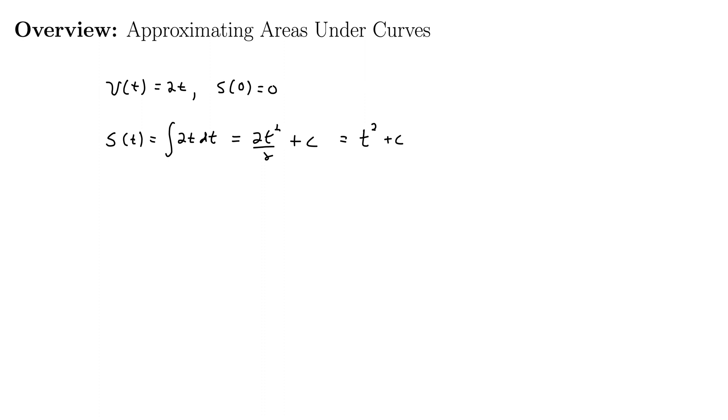Now we pull out our initial condition s(0) equals 0. Well if we plug in 0 for t, we get 0 plus c and we know that whole thing equals 0, which happily tells us that c is 0. Thus, we now have our final position function s(t) is t squared.